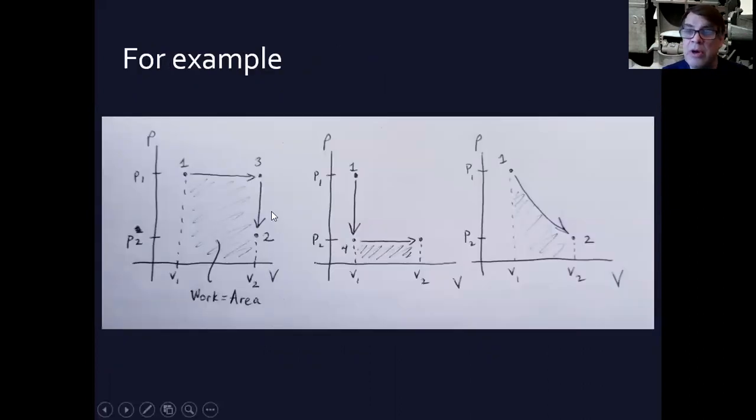Again, I'm not wanting to violate copyright. I've done my own scribble. This illustrates it very easily. So let's say I'm trying to go from pressure one to pressure two and from volume one. So P1 V1 at one to P2 V2 at two. Let's say I'm trying to go from one to two. There are different paths I can take.